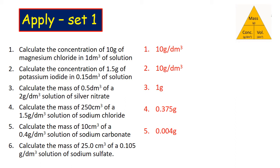Finally, again we're converting those volumes. Calculate the mass of 25 cm³ of a 0.105 g/dm³ solution of sodium sulphate. And that should get you an answer of 0.00263 g/dm³.